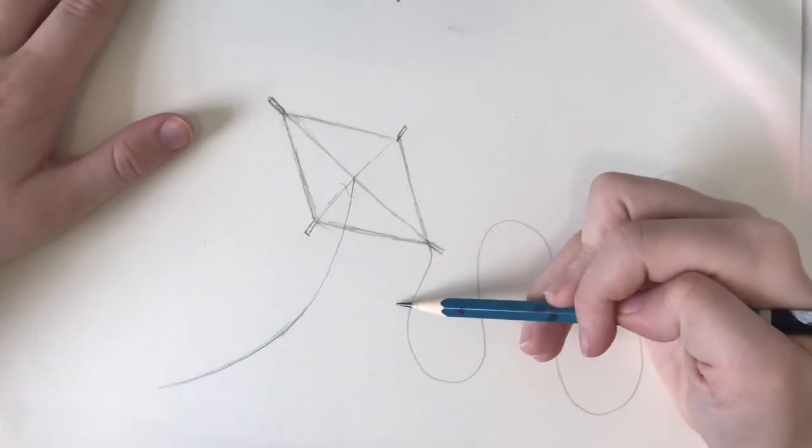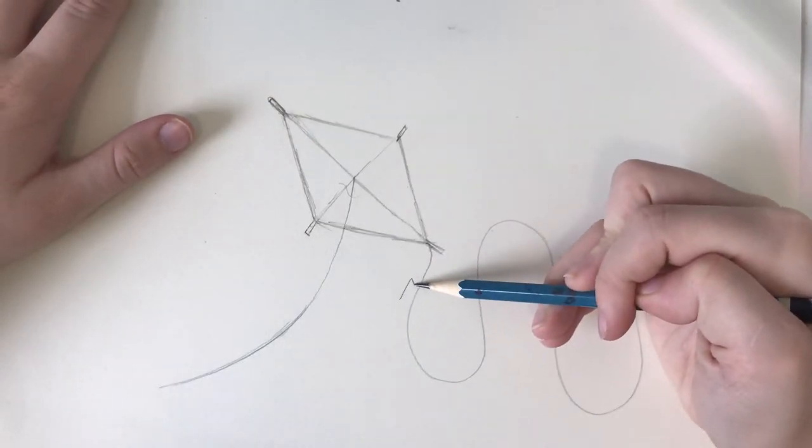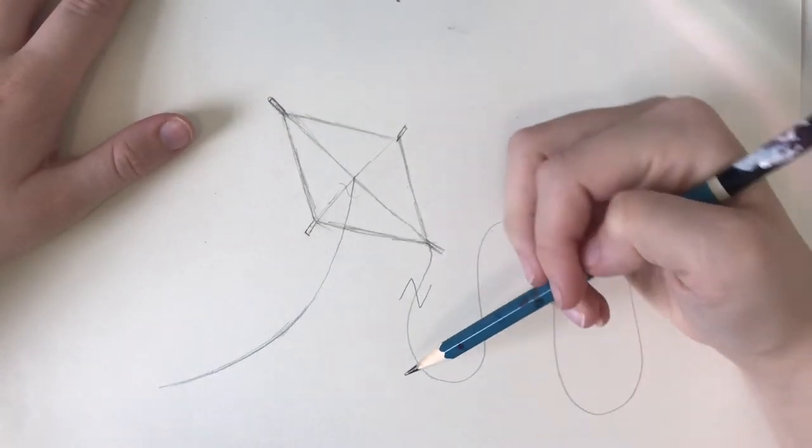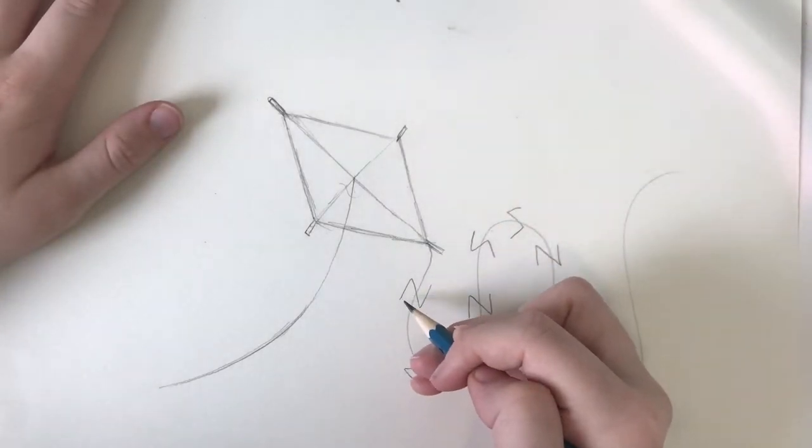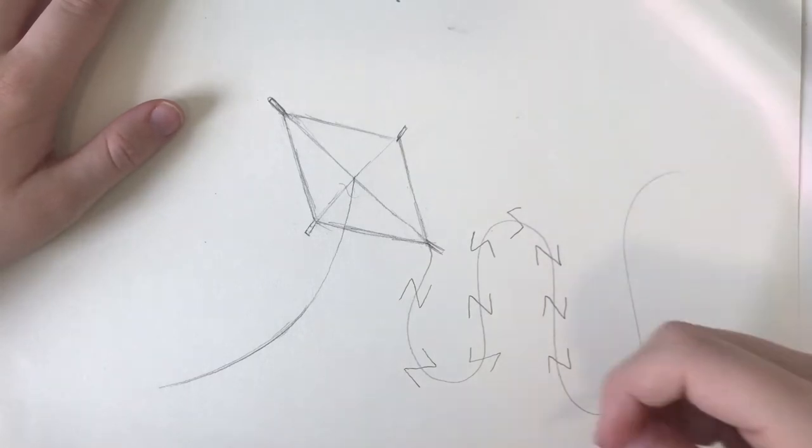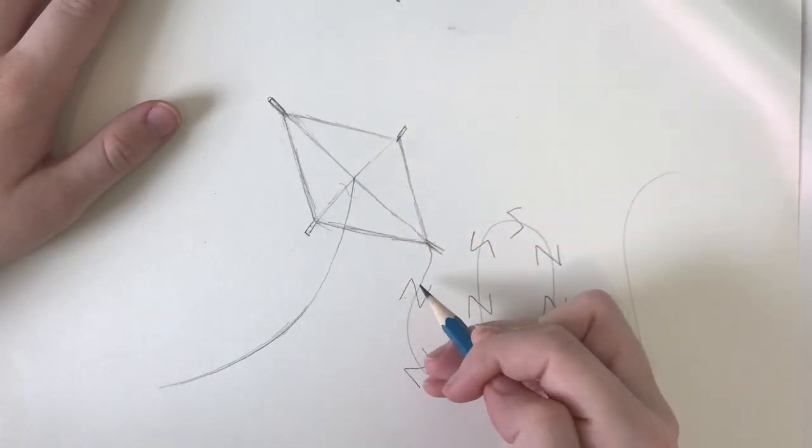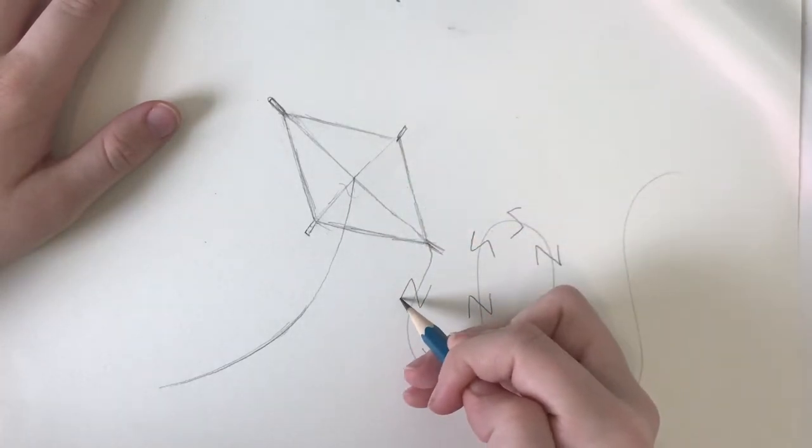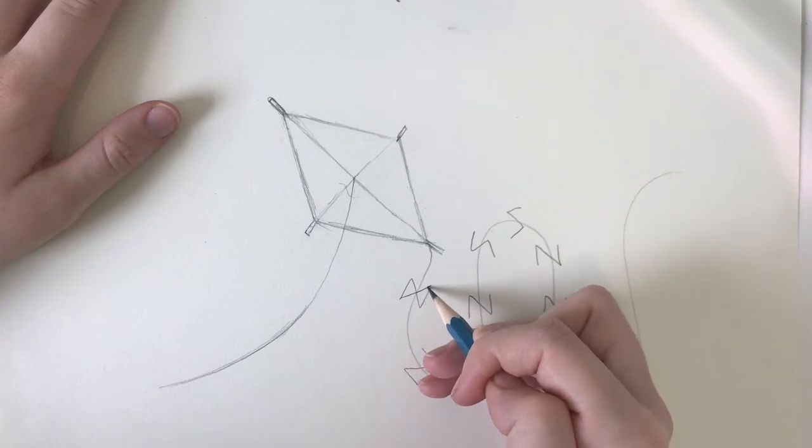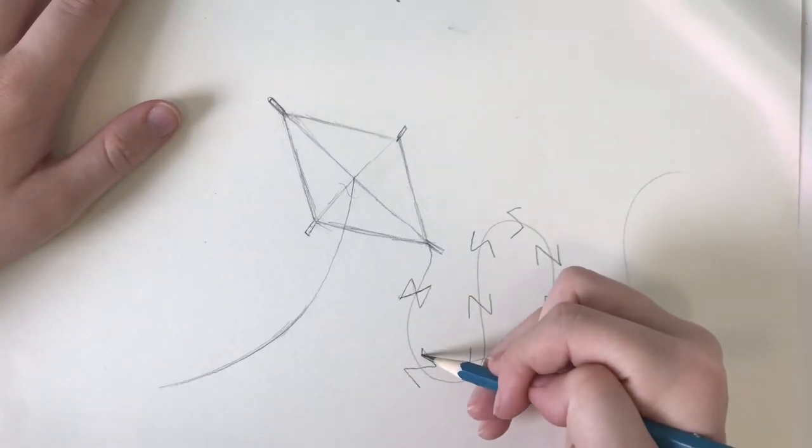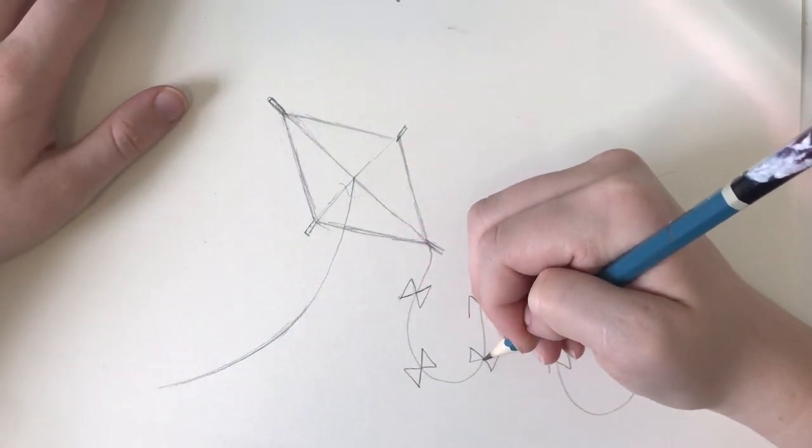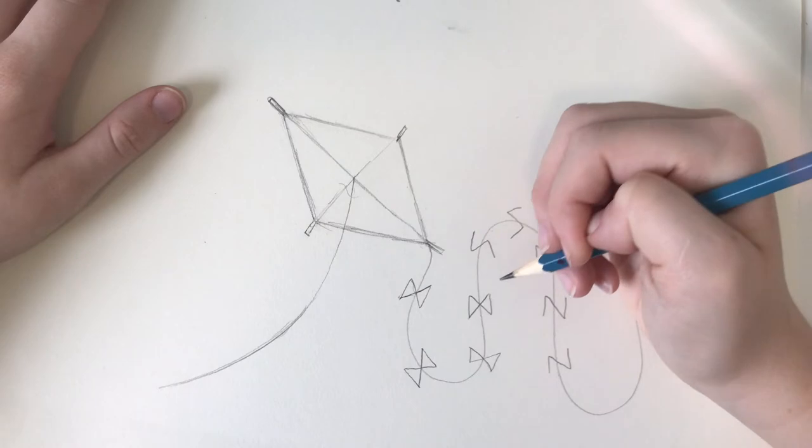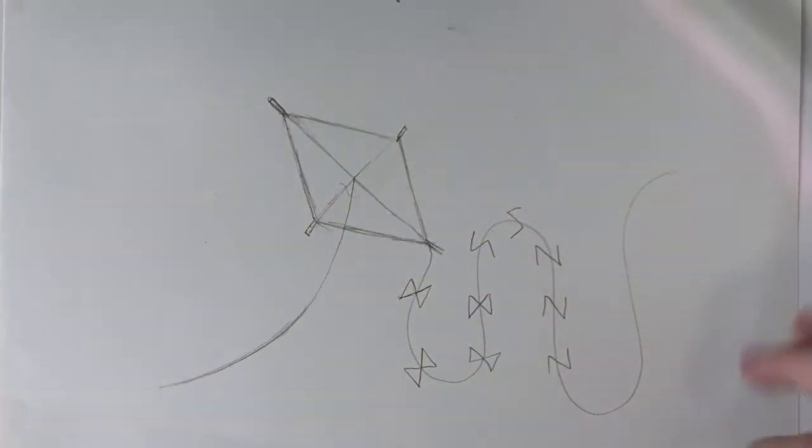Now I'm going to add some little bows along the little tail of the kite. And for that, I'm going to draw the letter N across. And then I'm going to do that all the way along here. But once you draw the letter N, you're just going to draw a line straight through and connect it. And then you've got these cute little bows. So I'm going to draw them all along the tail and then I'll be back. Alright.